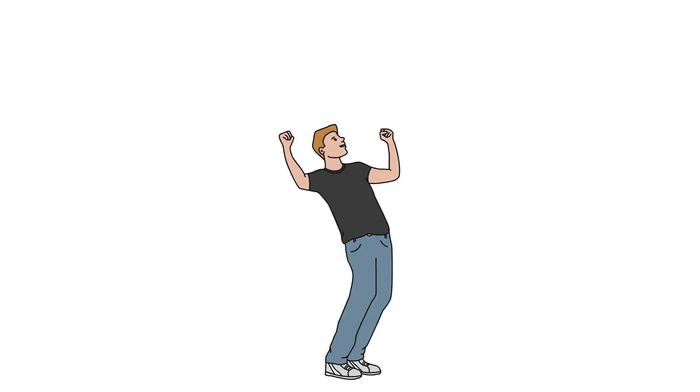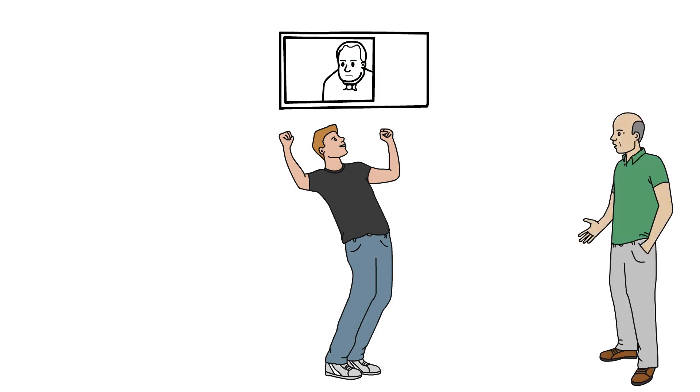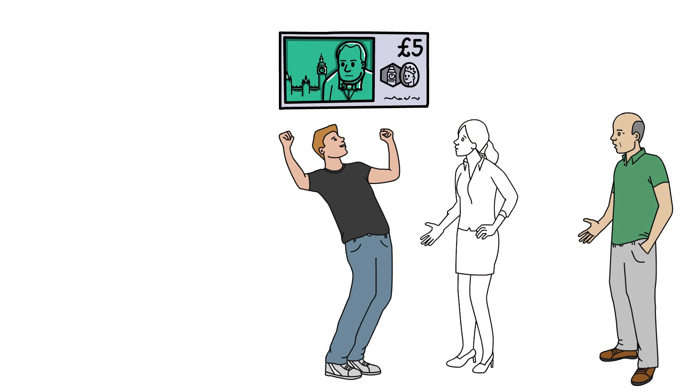But Fagin decides that Oliver has to be brought back, since he might tell the police about them. When Oliver is sent off with five pounds to pay for some books, a girl called Nancy is sent out to intercept and bring back Oliver.